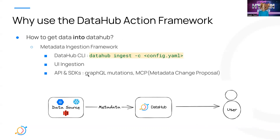So what does it do? Before we dive into this, let's start with this question: how do we get data into DataHub? To get data from data sources like BigQuery and Snowflake into DataHub, you'd use our metadata ingestion framework. This could be a simple command via our CLI or some low-level manipulation using our APIs and SDKs. Using this, you get metadata and publish it into DataHub.